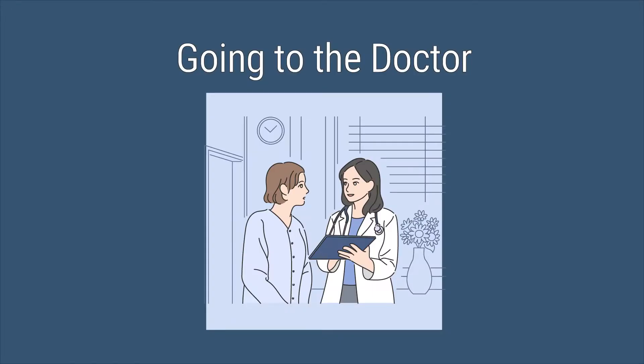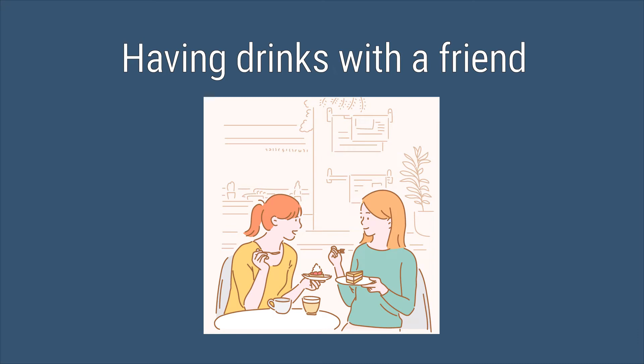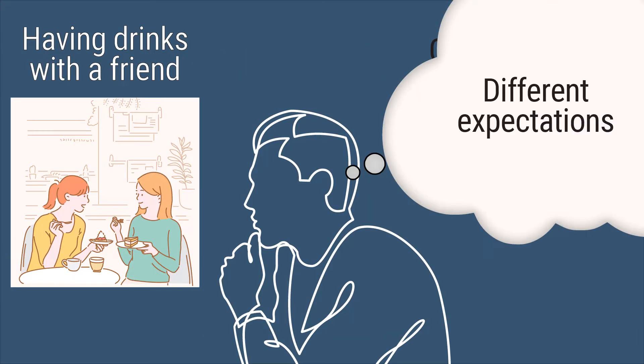For example, think about going to the doctor. You have a set of expectations — a mental model for what's going to happen: your role in the interaction, how that conversation will go, how you'll handle payment. Now it's the same with having drinks with a friend. You also have expectations about the rules that drive that interaction. You'll probably ask about each other's lives, swap some stories. Your interaction will be less formally structured than your visit to the doctor.